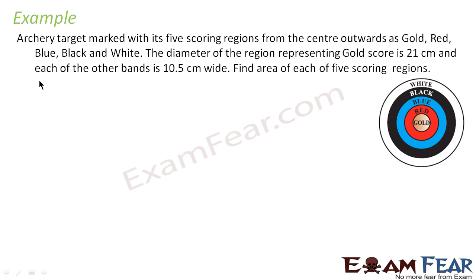Let's take one example. The question says archery target marked with 5 scoring regions from center outwards: gold, red, blue, black and white. The diameter of the region representing gold is 21 cm, so radius of the gold is 21 by 2 which is 10.5. This is the radius of gold.